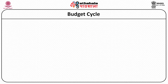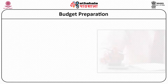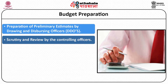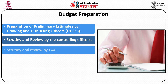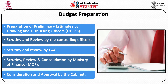Budget cycle: the budget cycle in India comprises three distinct stages which can be classified as budget preparation, budget enactment and budget execution. Budget preparation is basically comprised of four to five stages which includes preparation of preliminary estimates by the drawing and disbursing officers, then scrutiny and review by the controlling officers, scrutiny and review by the Controller General of Accounts, scrutiny, review and consolidation by the Ministry of Finance, and consideration and approval by the Cabinet.